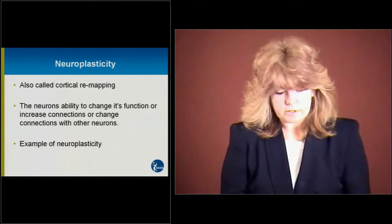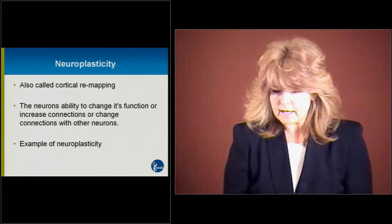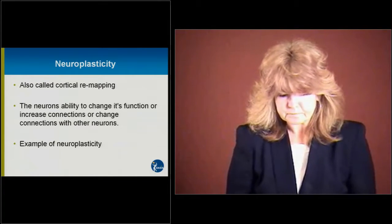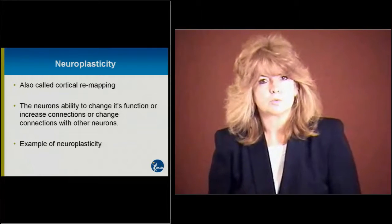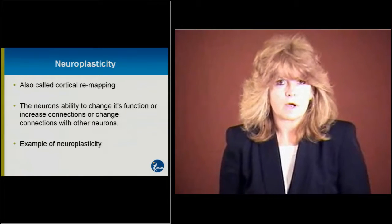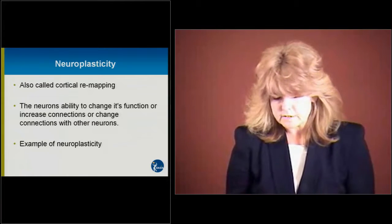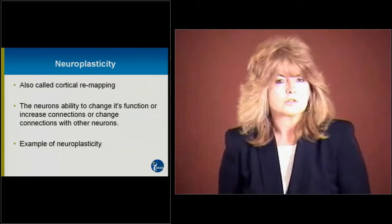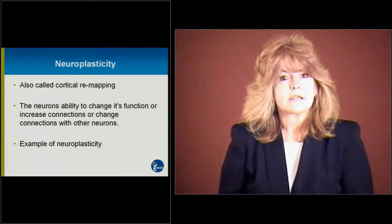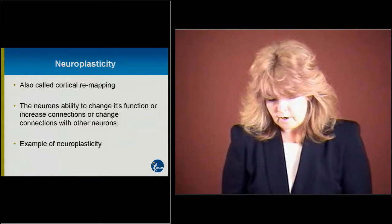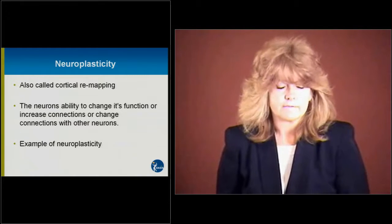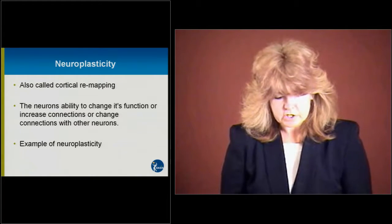The next thing we're going to look at is neuroplasticity. Neuroplasticity is also called cortical remapping. And neuroplasticity is the brain's ability to reorganize itself by forming new neural connections throughout the span of our life. Neuroplasticity also allows the neurons or nerve cells in the brain to actually compensate for disease or injury by adjusting their activities in response to new changes or perhaps changes in the environment.